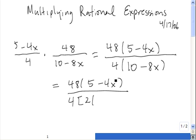If we pull a 2 out of the 10, we're left with a 5. If we pull a 2 out of the -8x, we're left with a -4x.